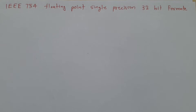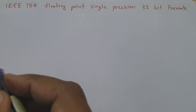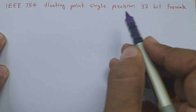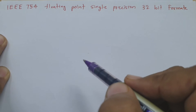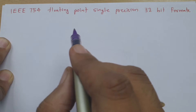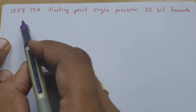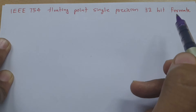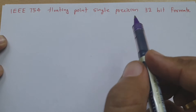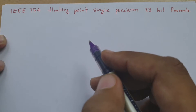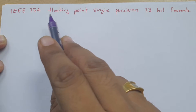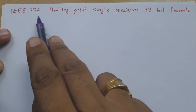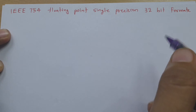Welcome to Engineering Funda channel. I, Professor Itesh Golagya, am going to explain IEEE 754 floating point single precision 32-bit format in this session. If any number is given to you, how to represent that number in IEEE 754 floating point single precision 32-bit format — that is what we will be studying. I will first explain the steps required to convert a given number into IEEE 754 floating point single precision 32-bit format.